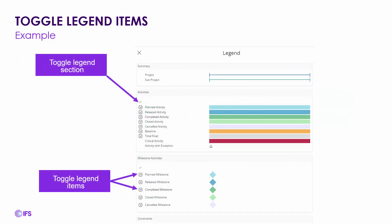Another change is the ability to toggle legend items on and off. You can turn on and off the different legend items you want to see within the legend itself — for example, project, sub-project, different activities, milestone activities, and several others listed below. You can toggle off the entire section or individual items by clicking the upper-right icon of the legend within the Gantt chart.